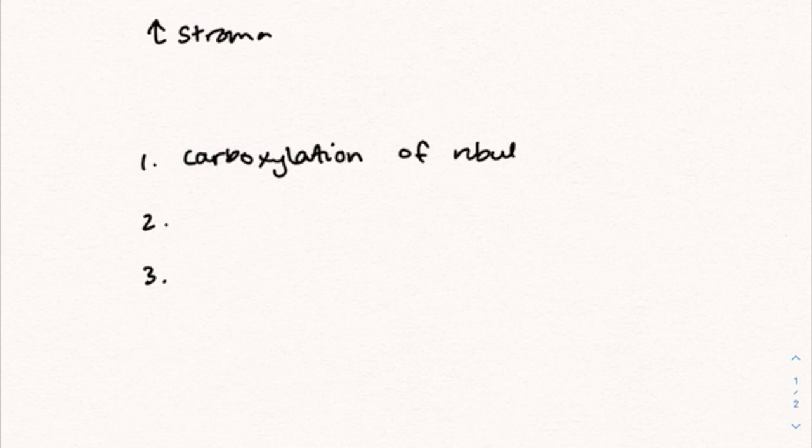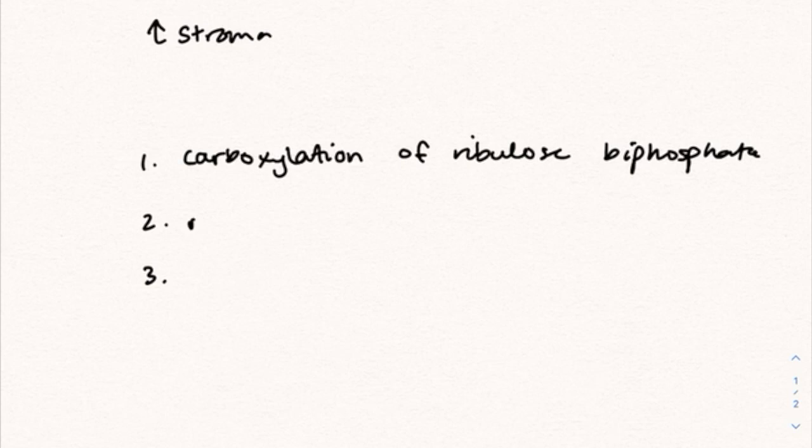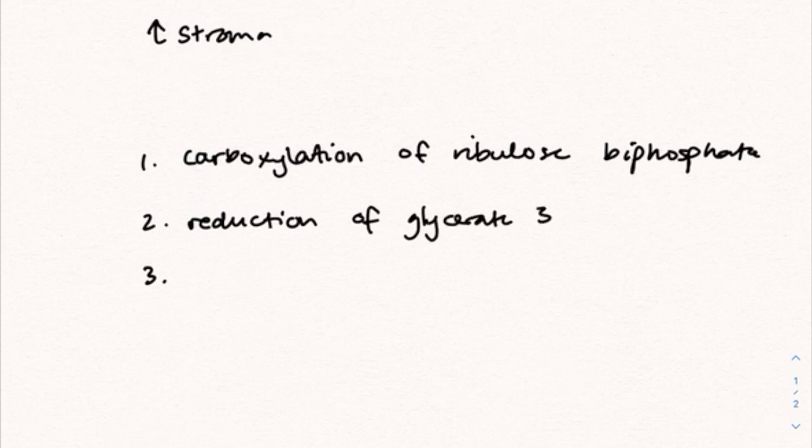There are three main steps in light-independent reactions. Firstly, we have the carboxylation of ribulose-biphosphate. Secondly, there's the reduction of glycerate-3-phosphate. And thirdly, we have the regeneration of ribulose-biphosphate.